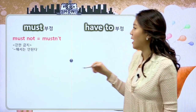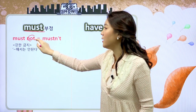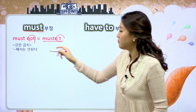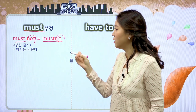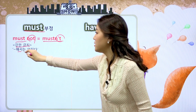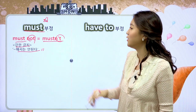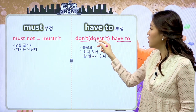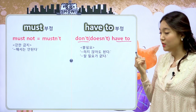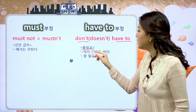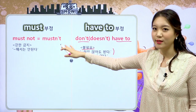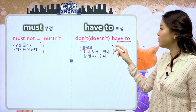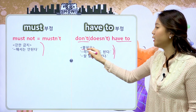must를 부정하는 방법: must 뒤에 not을 붙이면 돼요. 줄이면 mustn't가 됩니다. must가 뭐뭐 해야만 한다라는 강한 의무였다면 부정이 됐을 때는 강한 금지가 돼요. 그래서 절대로 뭐뭐 해서는 안 된다라는 뜻이에요. have to 같은 경우에는 부정을 하게 되면 don't have to, 혹은 3인칭 단수일 경우에는 doesn't have to 이렇게 되겠죠. 뜻은 불필요입니다. 뭐뭐 하지 않아도 된다, 혹은 뭐뭐 할 필요가 없다라고 해석이 돼요.